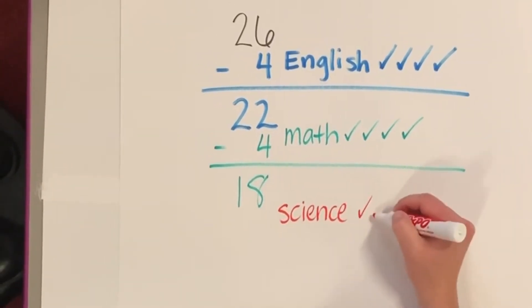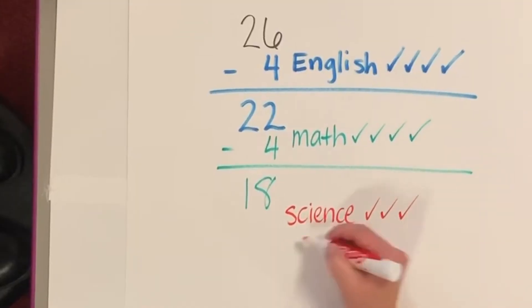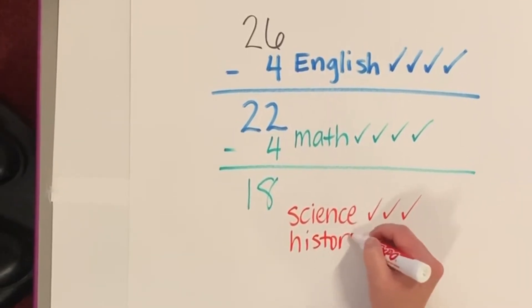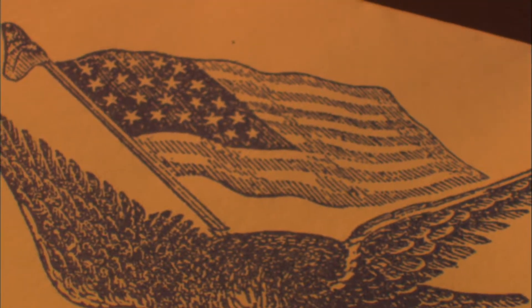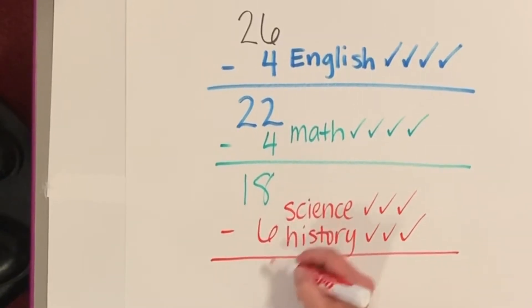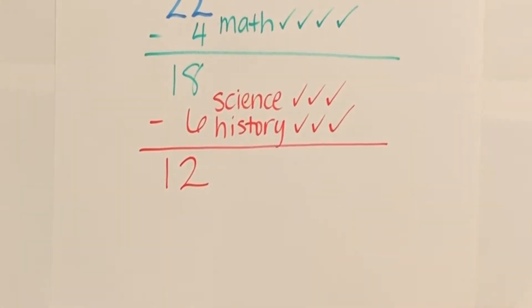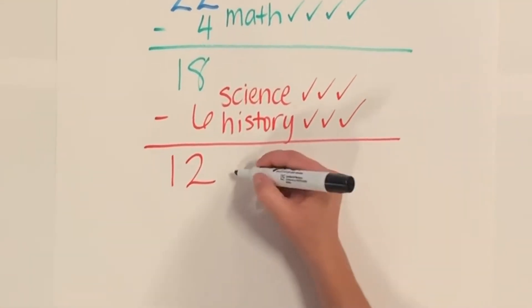That's 4 more credits out of the 26. Now you're only down to 18 credits needed. You're required 3 years of science, 3 years of history.